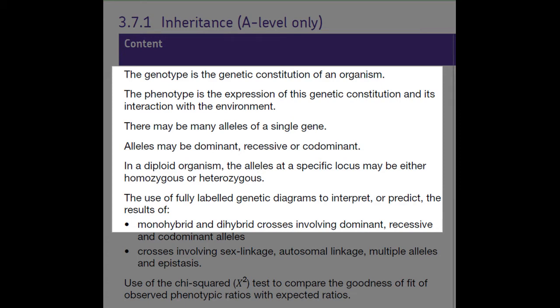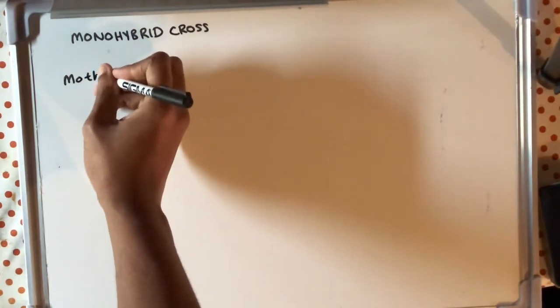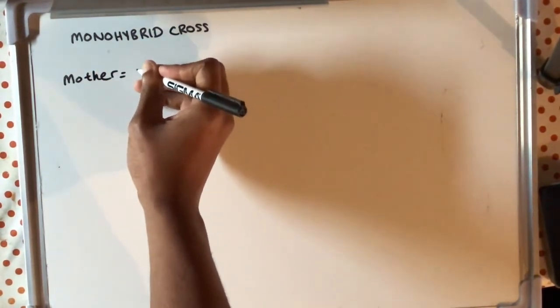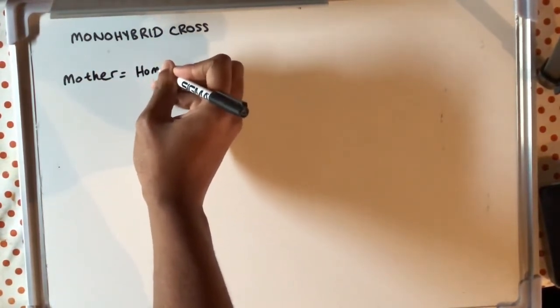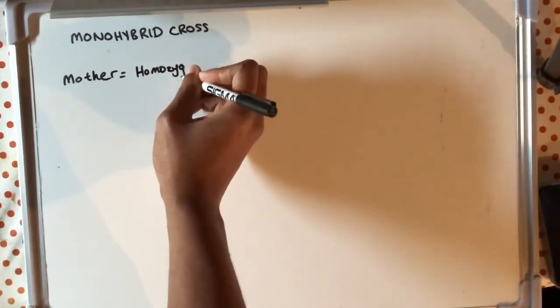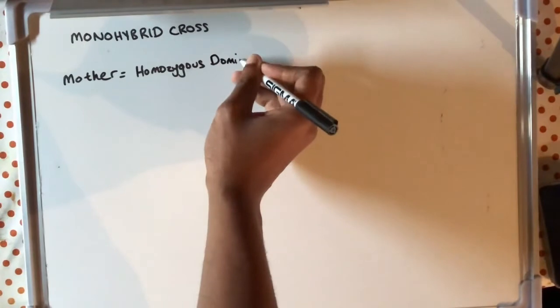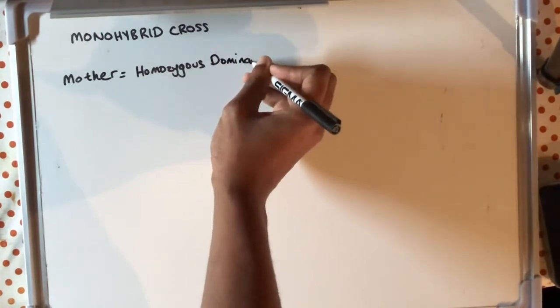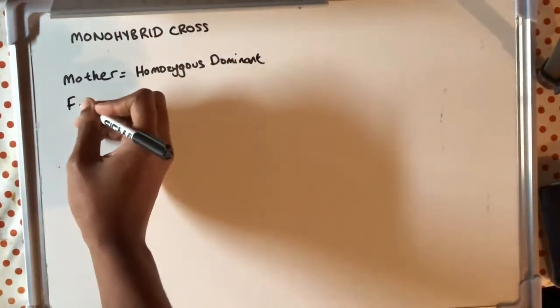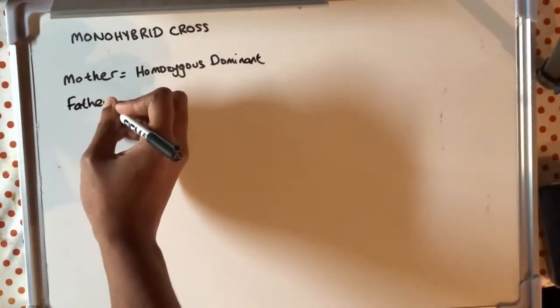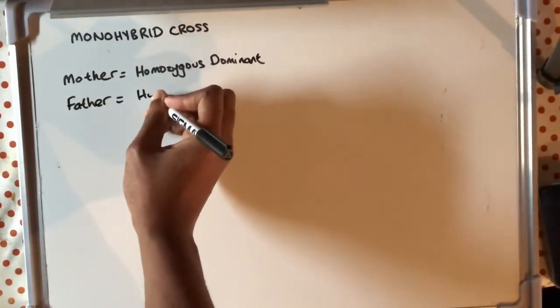Hello Year 12. This video should match up with the lesson titled Mono-Hybrid and Di-Hybrid Inheritance. In GCSE you did a topic on inheritance where you were required to construct Punnett squares, complete genetic crosses, and represent probabilities using ratios and percentages. So this will be a quick recap of that.